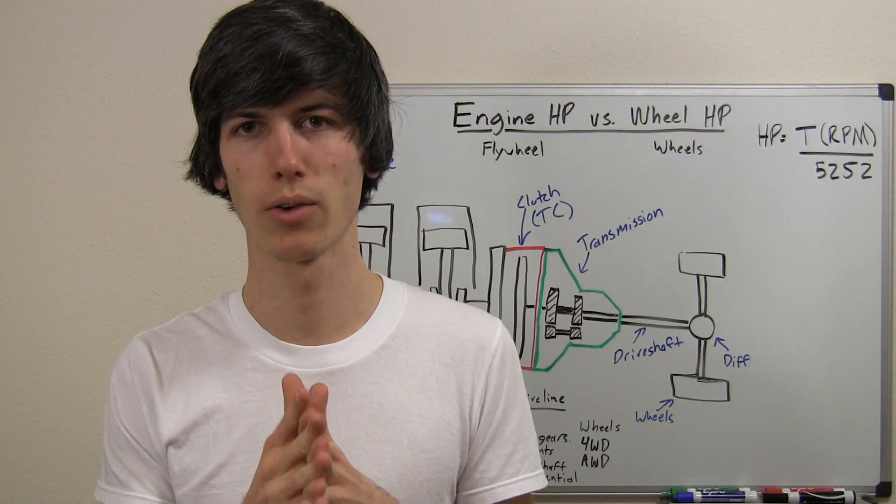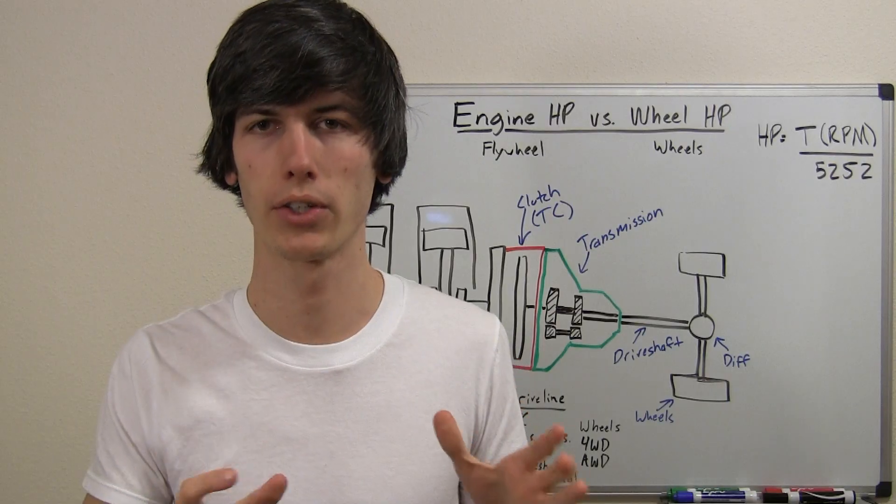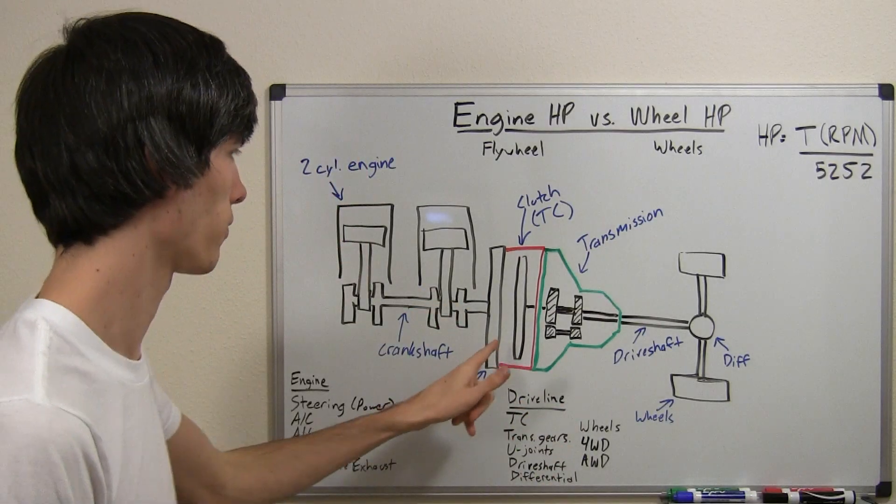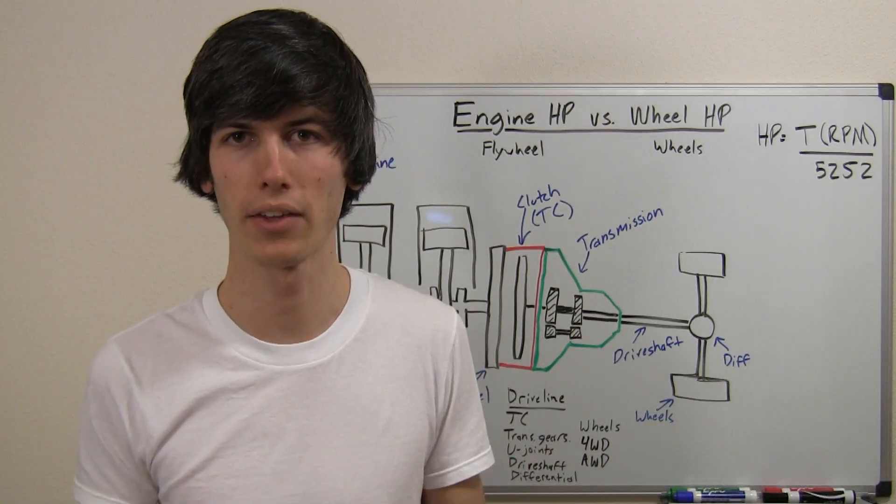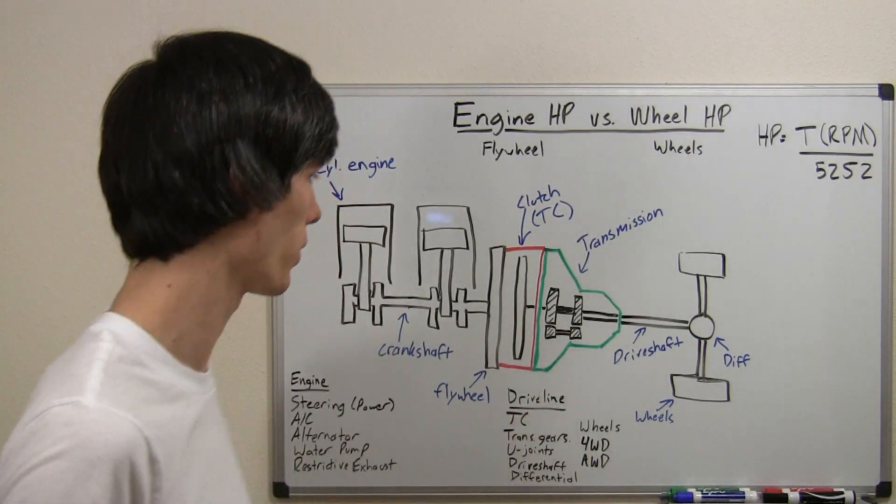Put very simply, engine horsepower is the horsepower your engine creates measured at the flywheel. Wheel horsepower is the horsepower that your car makes measured at the driven wheels.